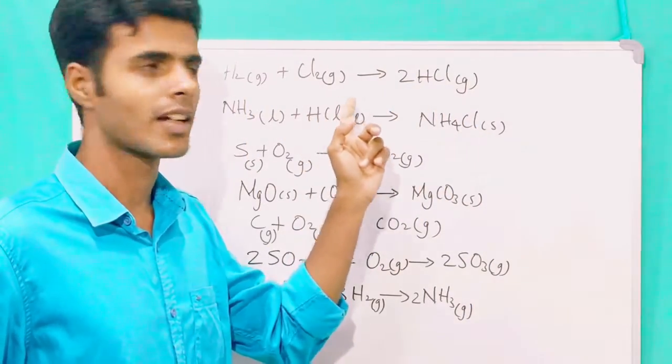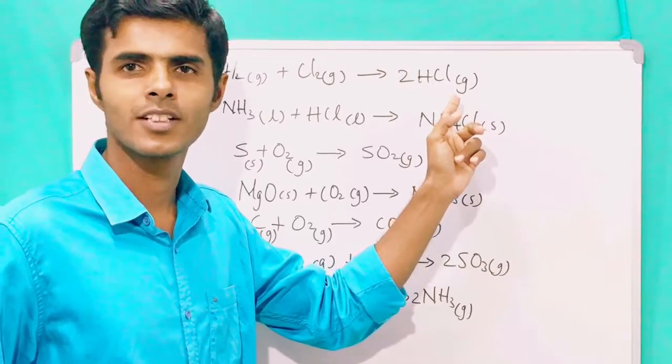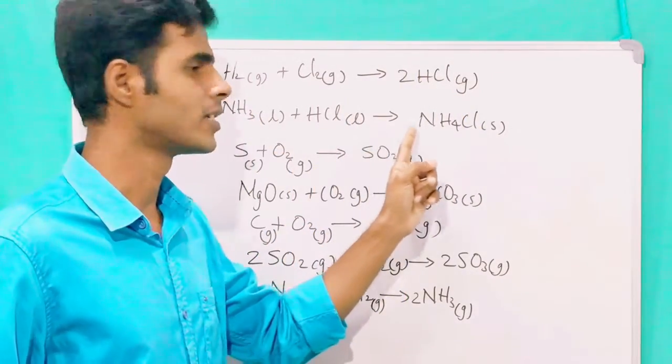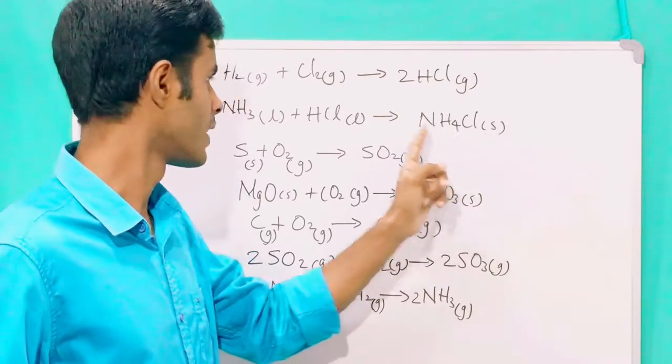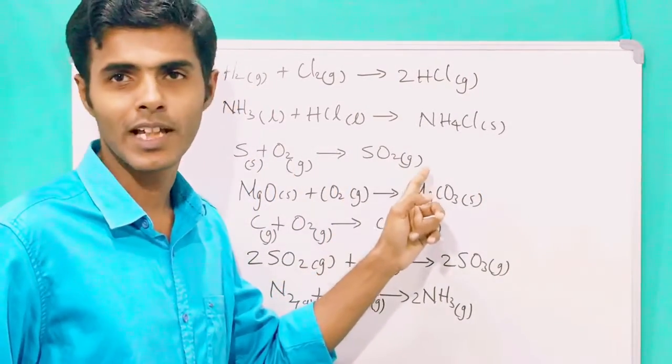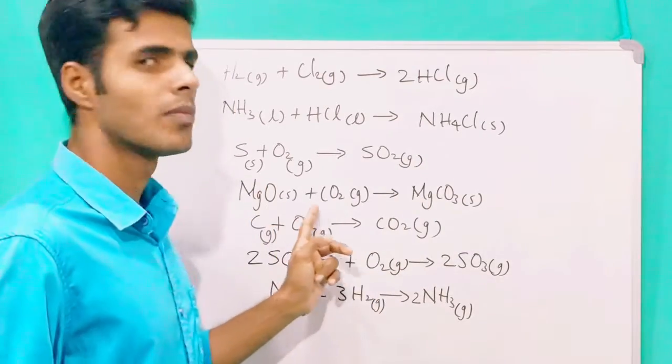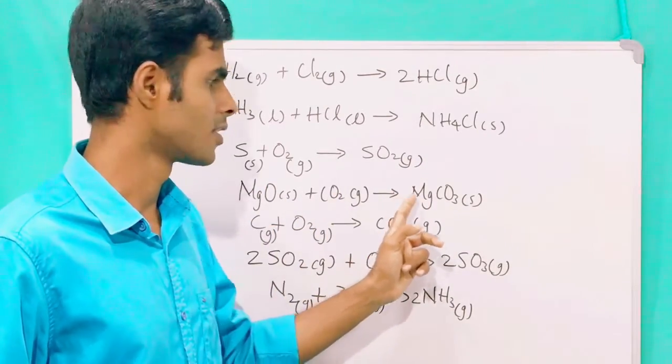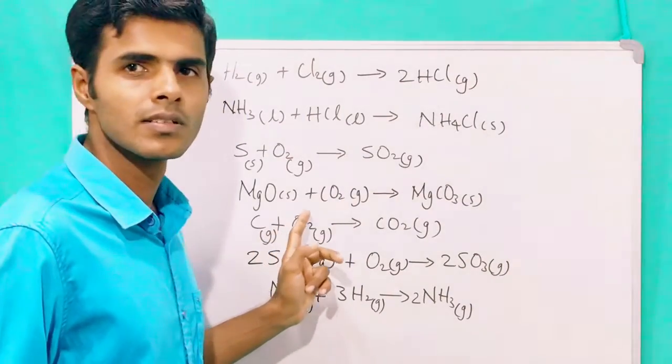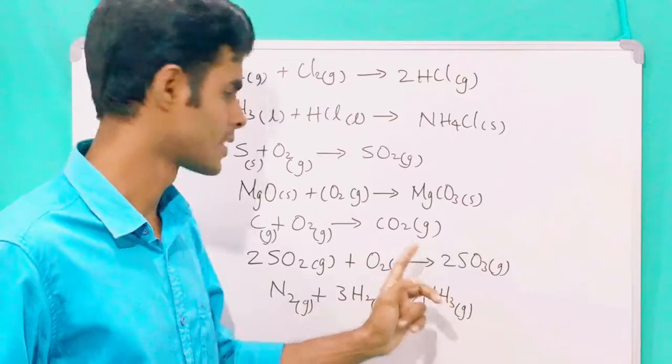Hydrogen and chlorine combine together to form hydrogen chloride. Similarly, ammonia and hydrochloric acid combine together to form ammonium chloride. Sulfur and oxygen combine together to form sulfur dioxide. Magnesium oxide and carbon dioxide combine together to form magnesium carbonate. Carbon burns in the presence of oxygen to form carbon dioxide.